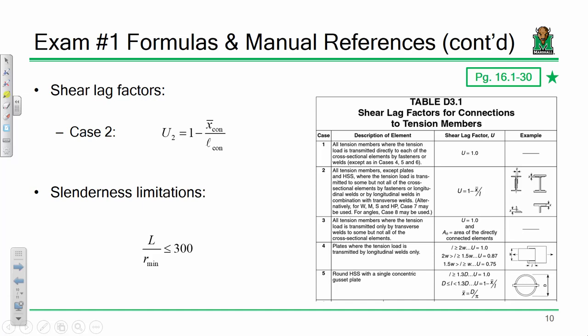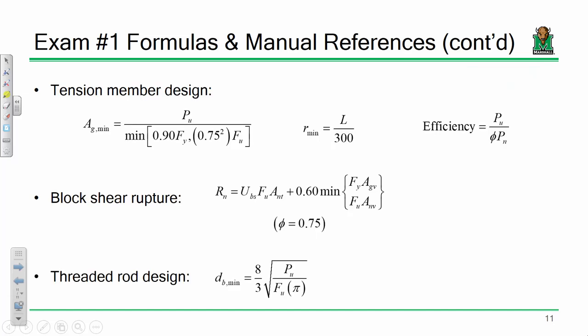Also, don't forget units. Remember, length is in feet. R is in inches. So make sure it's unitless. And these are the new formulas. Tension member design. We have our expression for minimum gross area. Our expression for the minimum radius of gyration. Our formula for efficiency. Block shear rupture. We have our expression for Rn for the nominal capacity. Remember, when this is all said and done, we need to adjust this by our phi value of 0.75. And then we have our threaded rod design to determine the minimum bar diameter based on prescribed loading. That is everything on exam 1.